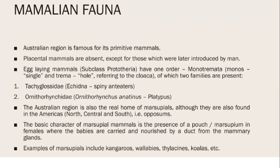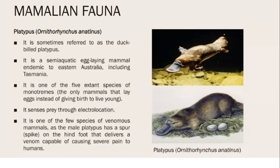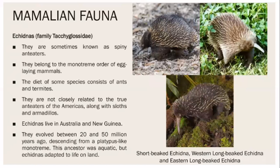The most important feature of the Australian region's mammalian fauna is that there are no placental mammals. Only monotremes (egg-laying mammals) and marsupials (pouched mammals) are present. The duck-billed platypus is an egg-laying mammal confined to Australia including Tasmania. It is one of five extant monotreme species, detects prey through electrolocation, and is one of the few venomous mammals — the male has a spike on the hind foot that delivers venom capable of causing severe pain to humans.